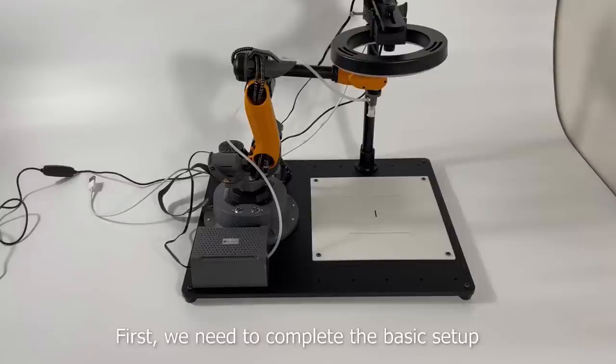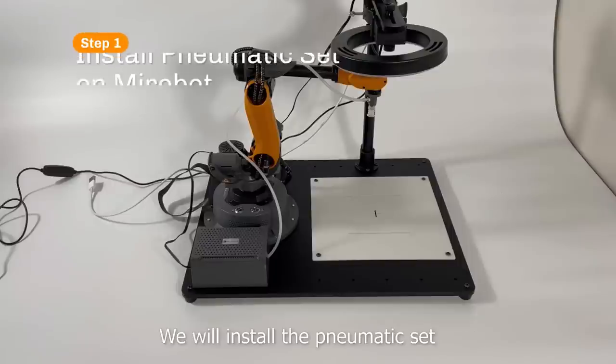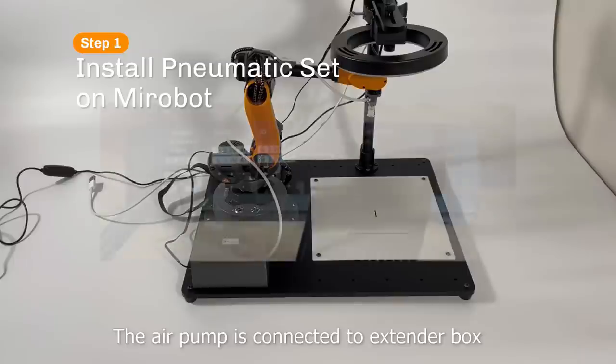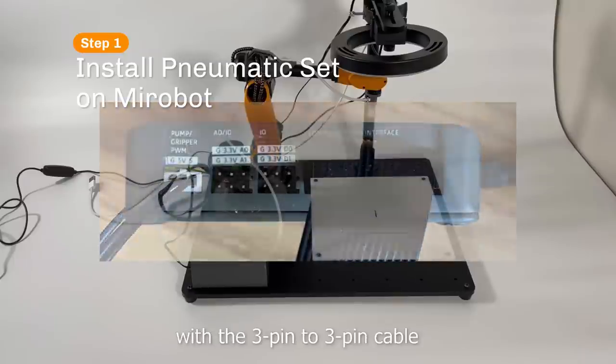First, we need to complete the basic setup. We will install the pneumatic set. The air pump is connected to the extender box with a 3-pin to 3-pin cable.